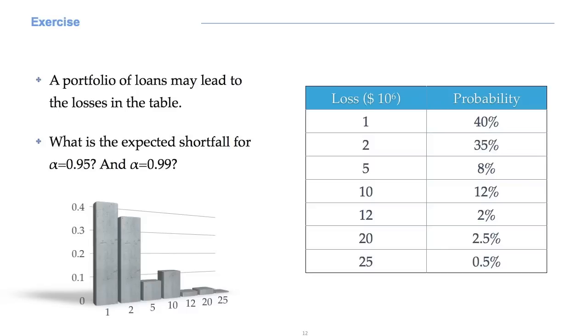Let's consider a last exercise to understand how we can compute the expected shortfall. A portfolio of loans may lead to the losses in the table. What is the expected shortfall for alpha equal to 0.95 and for alpha equal to 0.99? By the way, what is the 95% VAR in this case? Can you see it immediately?